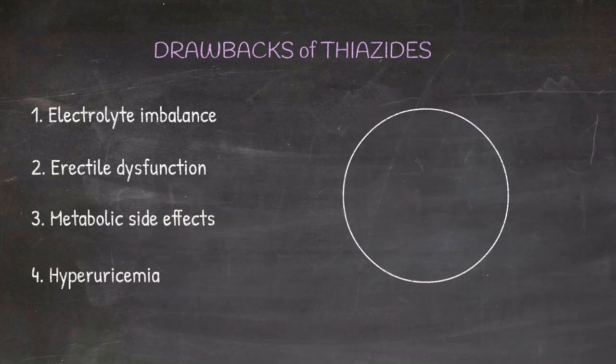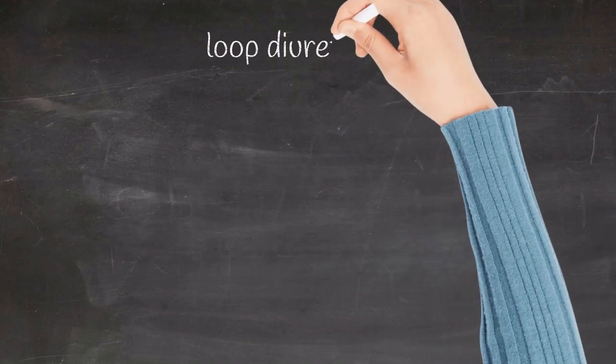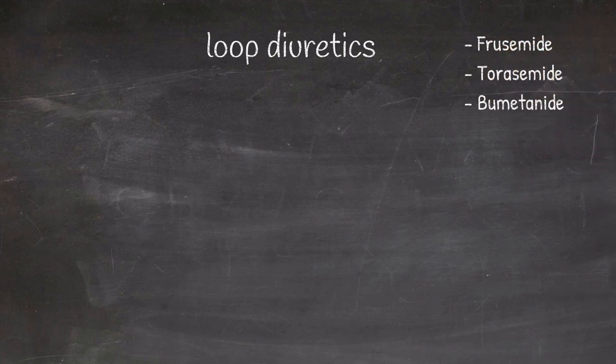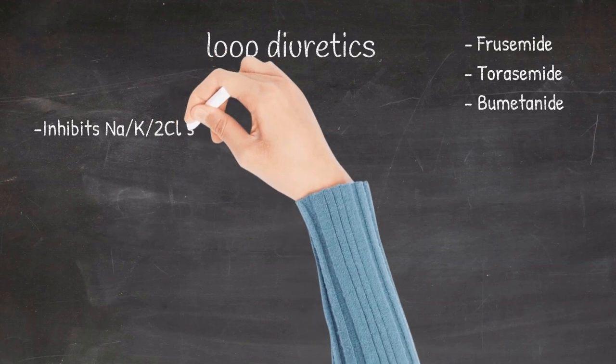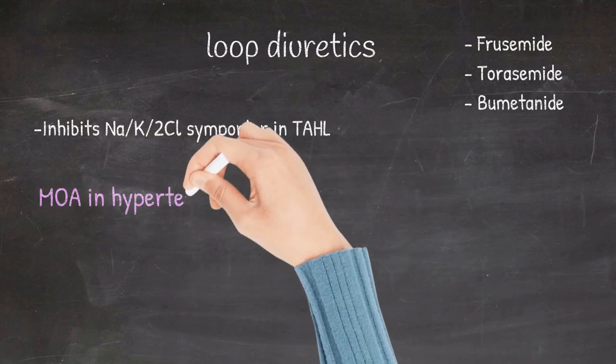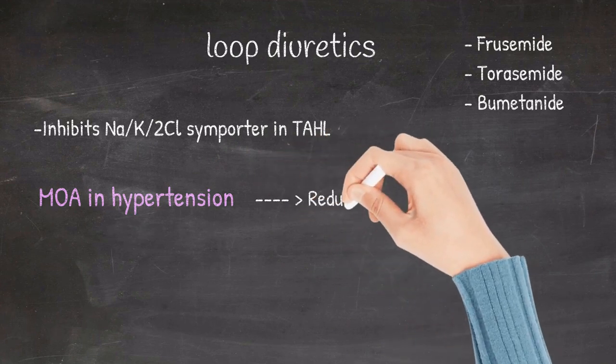The loop diuretics: some of the examples of loop diuretics include furosemide, torsemide, and bumetanide. These drugs act by inhibiting the sodium-potassium-2-chloride symporter in the thick ascending limb of loop of Henle.